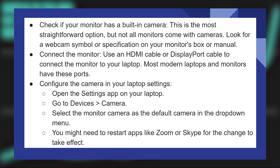Open the Settings application on your laptop, then go to Devices and open Camera. Select the monitor camera as the default camera in the drop-down menu. You might need to restart apps like Zoom or Skype for the change to take effect.